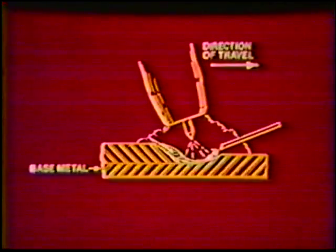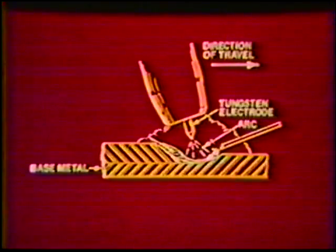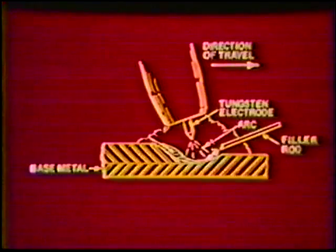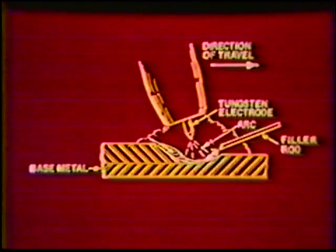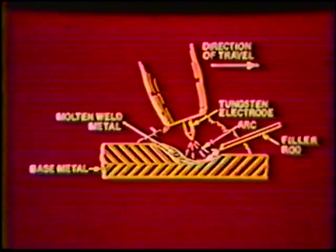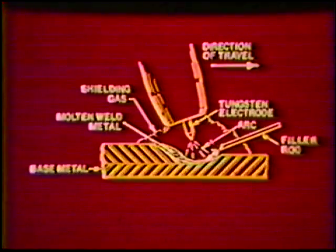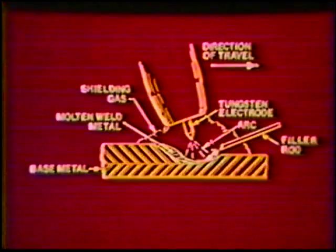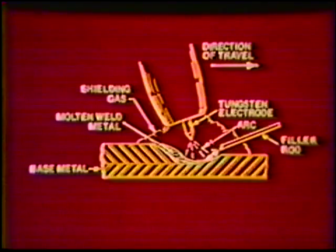The weld quality produced by this process is based on the method of operation. The Gas Tungsten Arc Process produces a weld by heating the metals to be joined with an electric arc using a non-consumable tungsten electrode. The filler metal is obtained from a filler rod which is added manually. The filler metal does not transfer across the arc, which reduces the chance of weld spatter. The molten puddle is shielded by an inert shielding gas. Argon is most commonly used because of its good shielding characteristics and its relatively low cost compared to other inert gases. The shielding gas eliminates the use of flux and the resulting chance of trapping slag in the weld deposit.